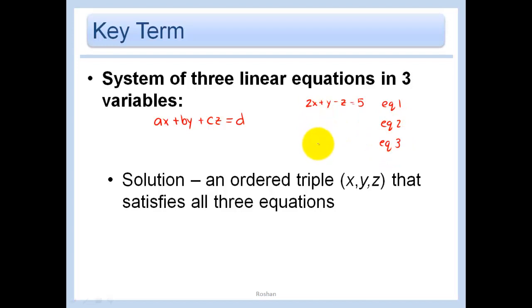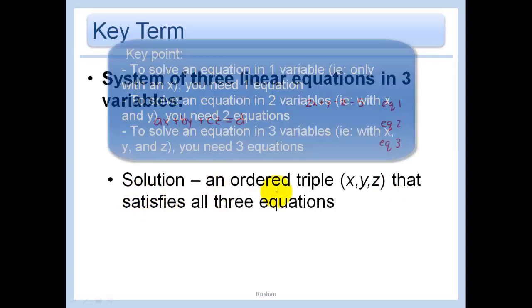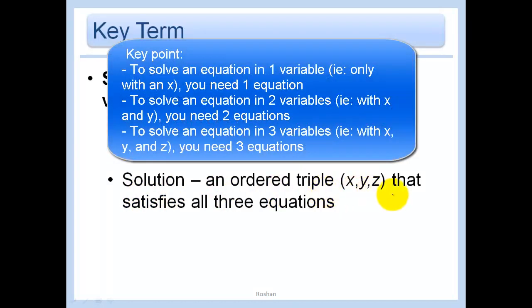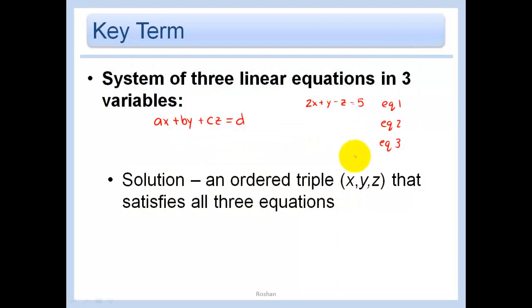You have three equations and you have three variables and then you'll be able to solve and get a solution, that is an ordered triple XYZ that satisfies all three equations. Remember in our system of equations with just two of them and an X and a Y, our solution had to work in both equations. Now our solution has to work in all three equations. If we have three variables to solve for, we must have three different equations.